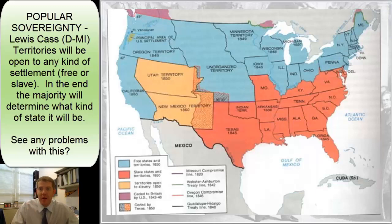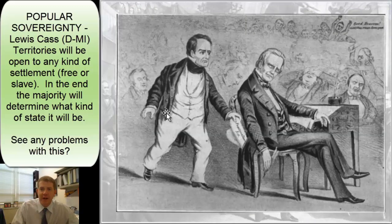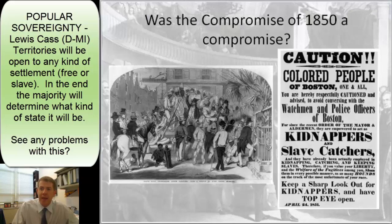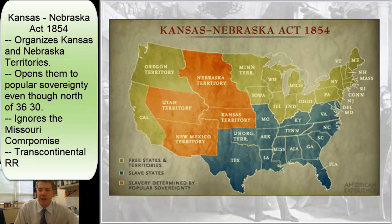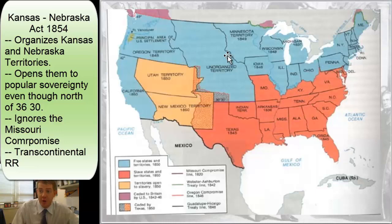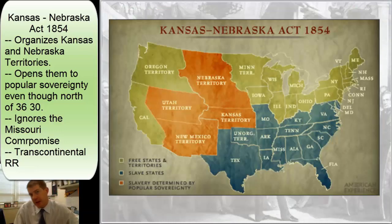Stephen A. Douglas from Illinois is the man who came in and helped work the Compromise of 1850 through Congress. A few years later, he came back with a new idea called the Kansas-Nebraska Act. This should be on your timeline for Chapter 10, Section 3. In 1854, he presented a bill to Congress in which he proposed organizing the old Louisiana Purchase Territory — which is north of 36°30' — into two territories, Kansas and Nebraska, and opening them to popular sovereignty.